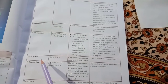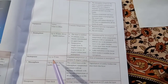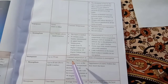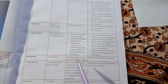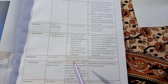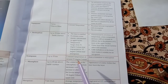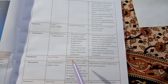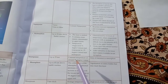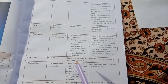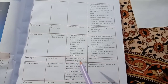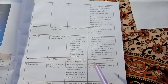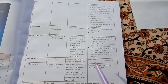The stratopause is found up to 55 kilometers above the Earth's surface, with a constant temperature of around 55 degrees Celsius. It serves as the zone of transition to the mesosphere.